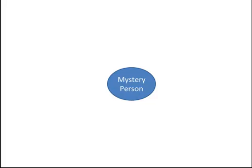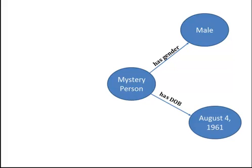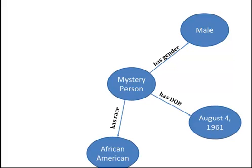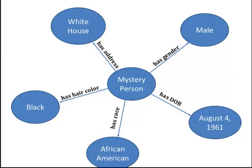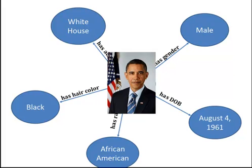Within an ontology, concepts are only defined in terms of their relationship to other concepts. For example, say we are describing a concept called Mystery Person. Mystery Person has many relationships to other concepts, including gender, date of birth, race, hair color, and address. We can use these relationships to define the Mystery Person. Can you guess who it is? Ontologies through RDF and OWL are designed and structured to capture such relationships.